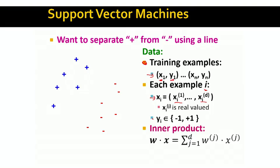The y is simply the class label, whether this is spam or not. The way we will do our classification, we will take this weight vector w and do a dot product with the feature vector x to make the classification.